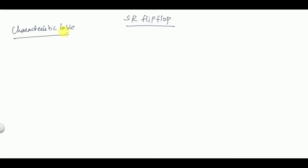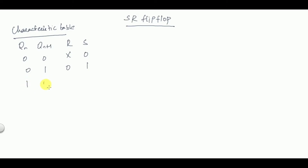Characteristic table of SR flip-flop: QN, QN+1, R, S. The entries are: 0, 0, don't care, 0 — 0, 1, 0, 1 — 1, 0, 1, 0 — 1, 1, 0, don't care. This is the characteristic table; you don't have to memorize this directly.